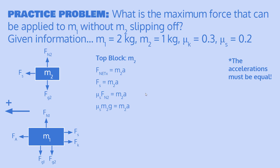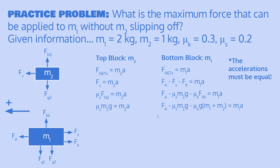Let's look at the top block first. Using Newton's second law, the net force equals mass times acceleration. In the x-direction, the only force is Fs, the static friction. We know Fs equals the coefficient of static friction times the normal force. In the y-direction, net force is zero since the blocks only move side to side, so the normal force Fn2 equals the force of gravity on m2, which is m2 times g. Substituting gives us Equation 1: Fs = μs × m2 × g, so acceleration = μs × g.